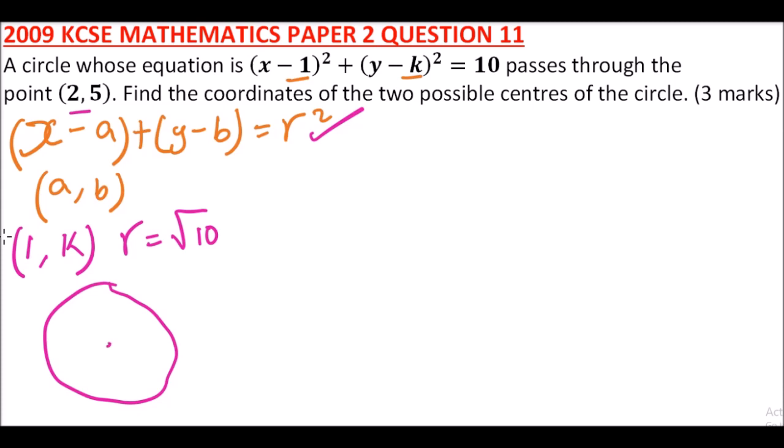And this is our center of the circle which is (1, k). So we can get the column vector of this. This is our radius. Get the column vector of r so that we'll be able to calculate the magnitude of the radius.